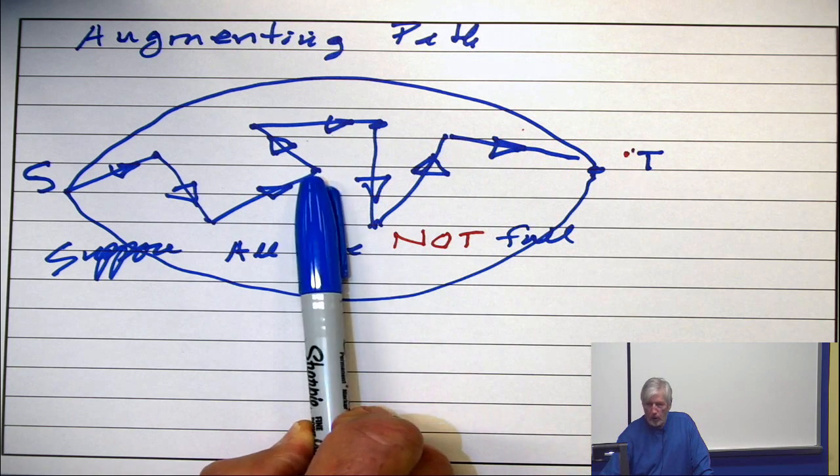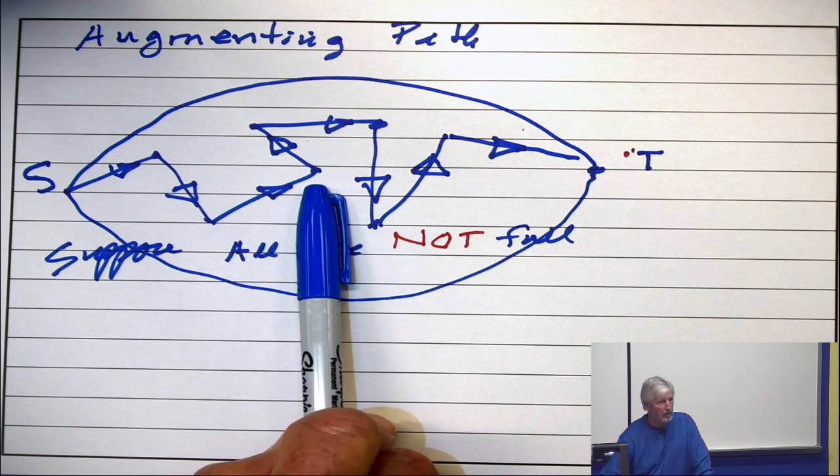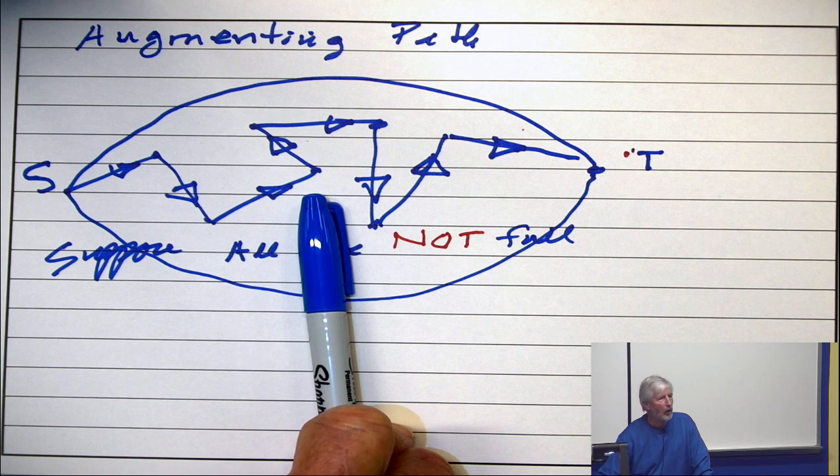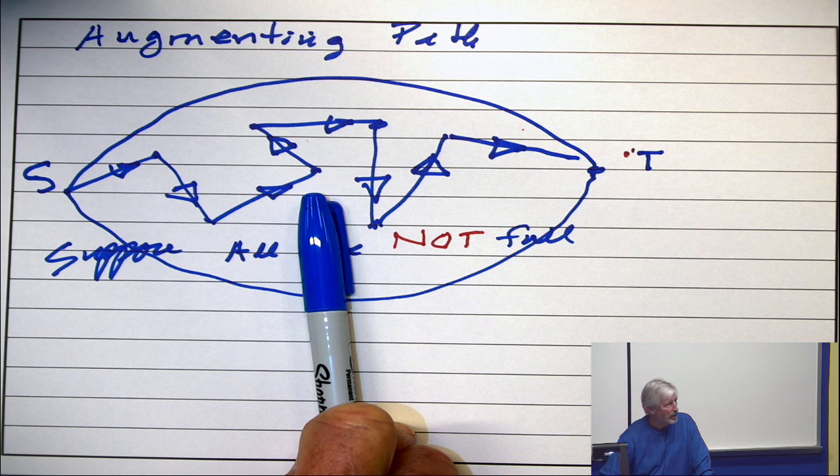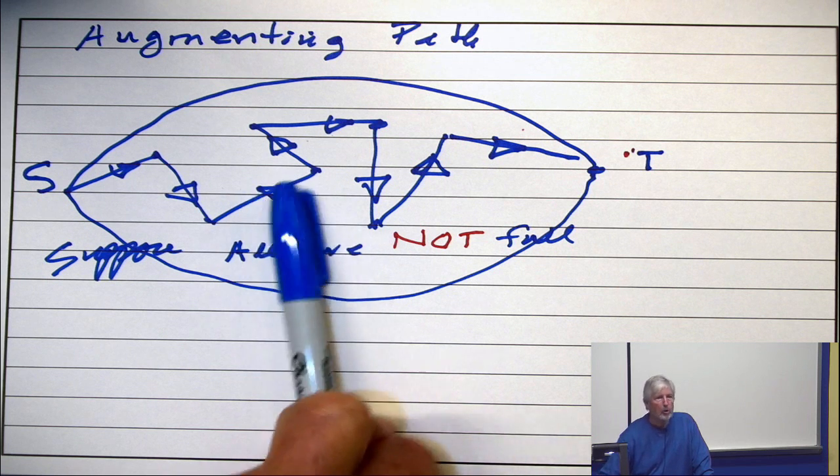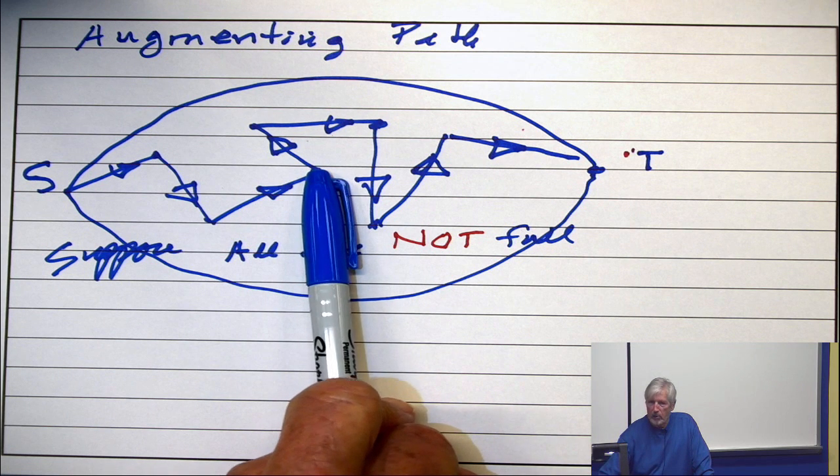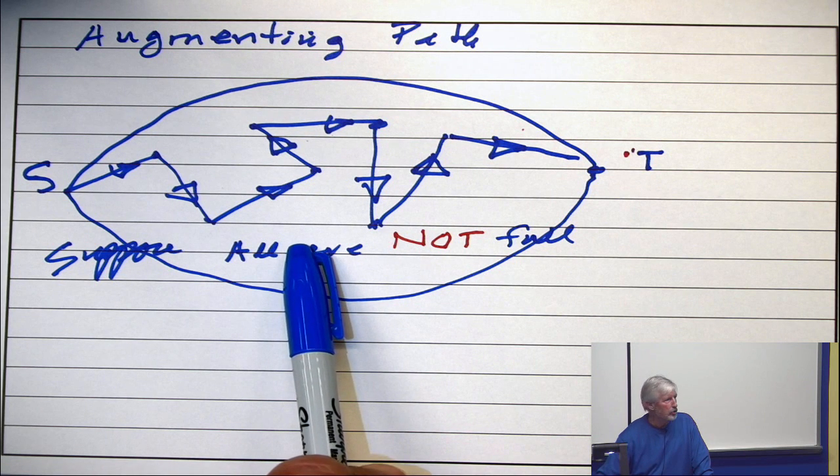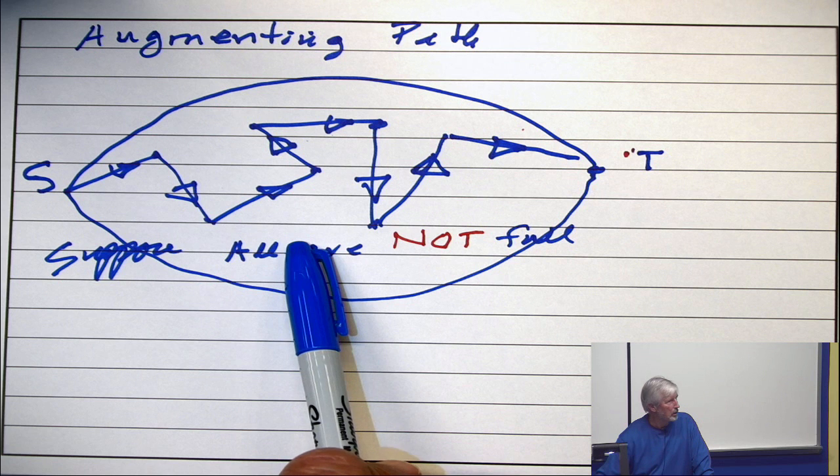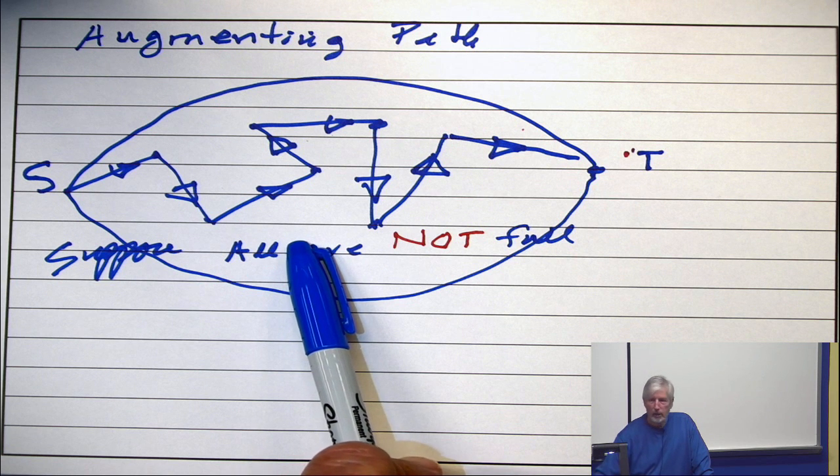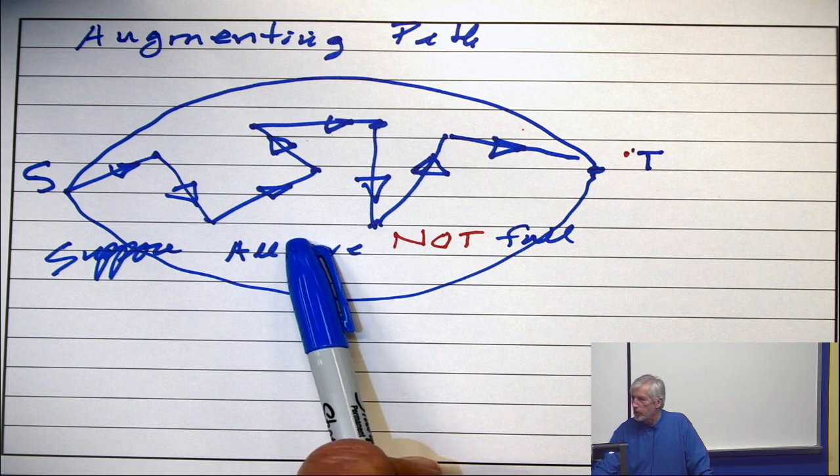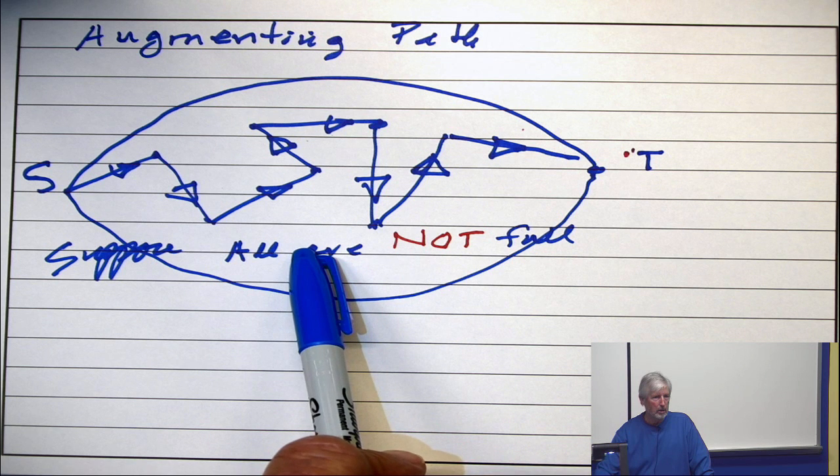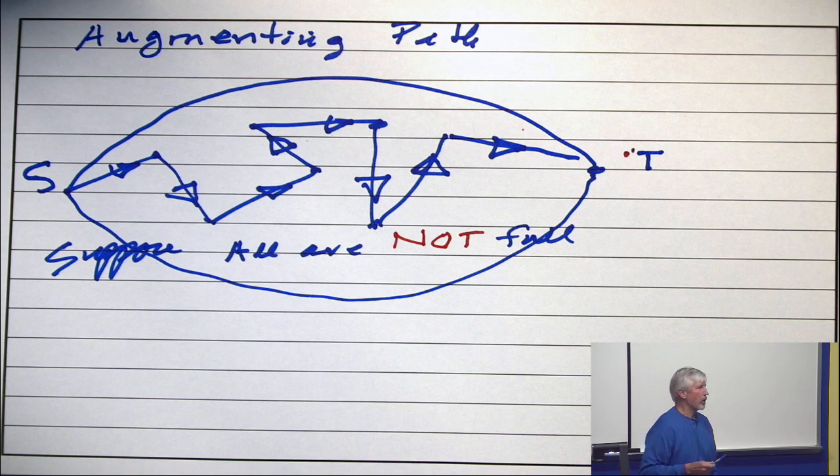So the conservation law used to apply right here. Amount in equals amount out. Those two amounts have both changed. How have they changed? They've gone up by 9. So it's still the case that the amount in equals the amount out at this vertex. All right, now take a vertex not on this path. Is the conservation law holding? Well, all the edges incident with it are the same. All the flows are the same. So it satisfied over here still is. No change. Okay, but the value of the flow has gone up by 9.